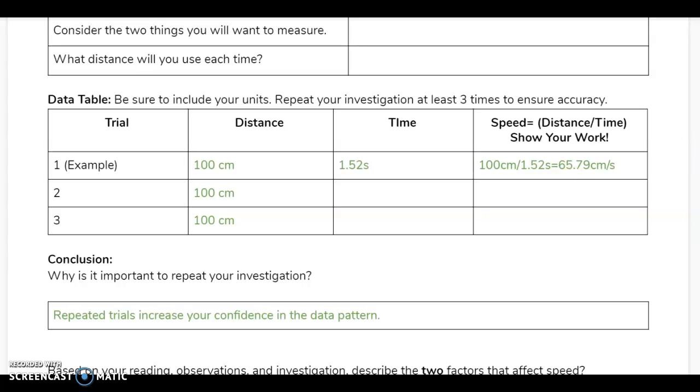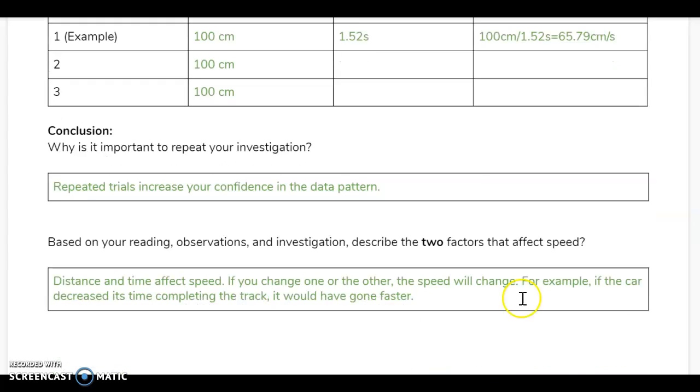This is going to vary based on what experiment you ran. The reason that we repeated this investigation three times and didn't just stop at one is because this increases our confidence in the data. By running three trials, we can feel confident that our data is accurate, or at least more accurate than if we had only run one trial.